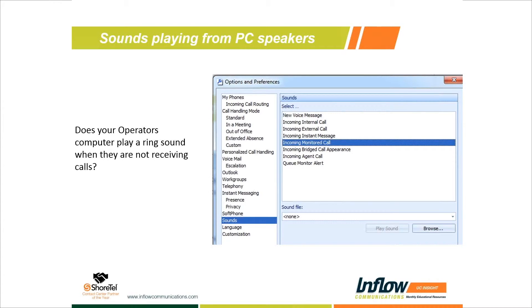You can do the same thing with 'incoming agent call' and the 'queue monitor alert' if you're part of a workgroup as a supervisor and you don't want to be alerted when agents call or there are queues. Turn those off but still leave your incoming internal, external call, and message speaker alerts on. Set those three to None as a sound file and hit OK — your sanity will be restored. It's a very common issue especially with newer installs or if you add a new operator.